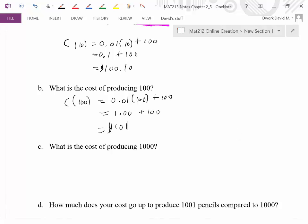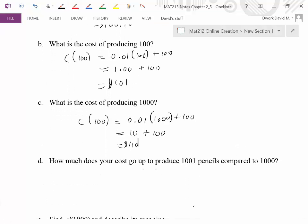How about a thousand pencils? I hope at this point you're kind of realizing what's going on here. That'd be ten dollars plus a hundred, so that means the total cost would be $110 to produce a thousand pencils. So now, if you haven't caught on to it, here this will hopefully make you catch it. How much does your cost go up to produce 1001 pencils compared to 1000 pencils? So what I'm saying is, how much does the 1000 and first pencil cost you?